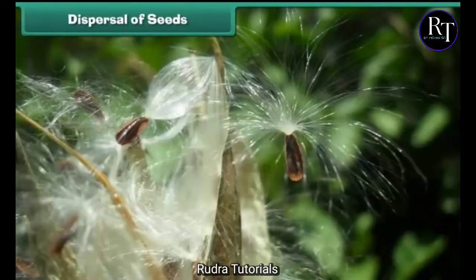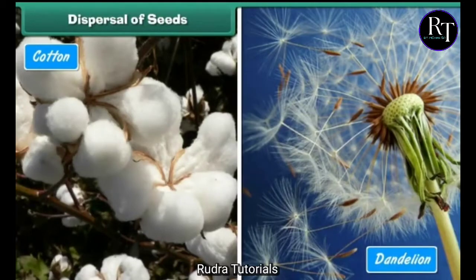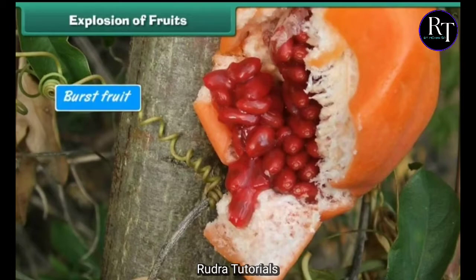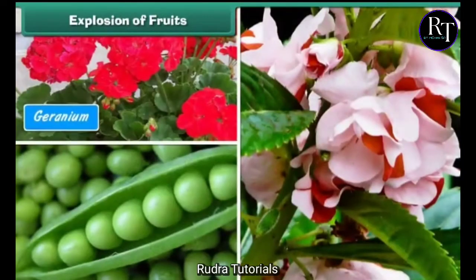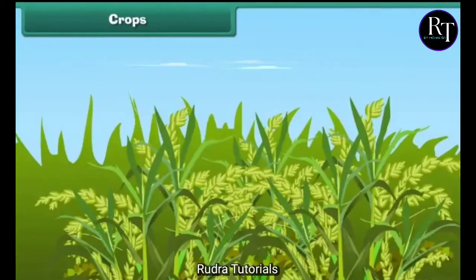Wind dispersal: seeds which are light in weight and have wings or feathers are dispersed by wind, e.g. cotton, dandelion, and maple. Explosion of fruits: some fruits, when ripe or dry, burst open and their seeds are thrown away. This process is known as explosion of fruits. Examples include geranium, balsam, and pea.